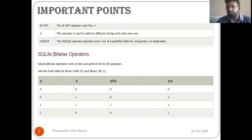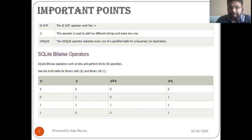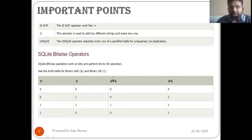Now we come to bitwise operators, which perform bit operations on numbers. SQLite bitwise operators work on bits and perform bit-by-bit operations. Here we have a truth table for binary AND and binary OR. For AND, it is only true when all conditions are true — so input one-one gives output one; all other combinations give zero. For binary OR, if one condition is true the result is true: one-zero is true, one-one is true, zero-one is true, zero-zero is false.